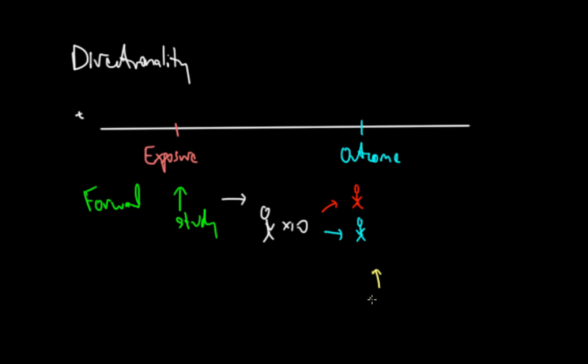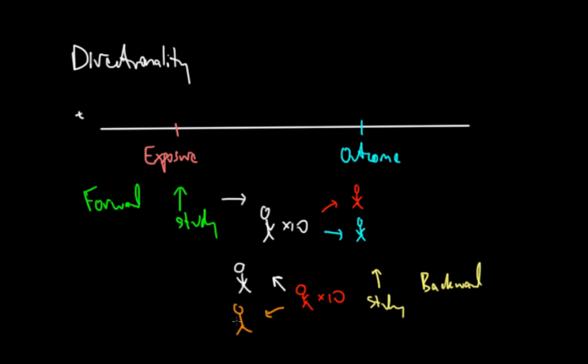A backward study is the reverse — it starts when you already have an outcome and looks to see which exposure caused that specific outcome. For example, you might have 10 patients with lung cancer and look back to see how many smoked and how many didn't. So whether a study is forward or backward depends on which you know first: the exposure or the outcome. In a forward study you track whether people with an exposure develop the outcome; in a backward study you start with the outcome and look back to identify the exposure.